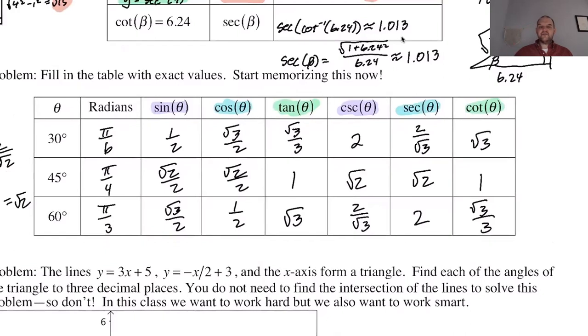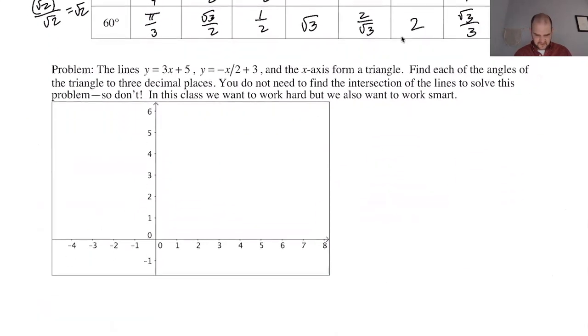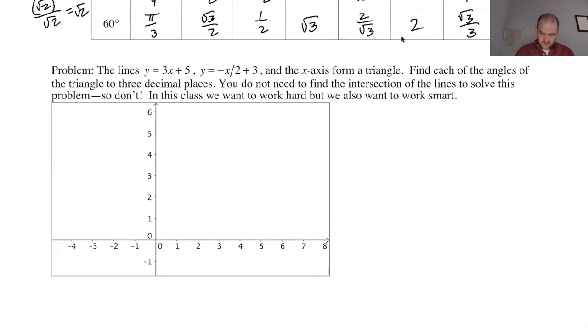So these are the values, really memorize sine, cosine, tangent, and then the relationships, and you get the other ones kind of for free, in my opinion. So let's see if we can answer this. There's a key piece of information here. The lines, y equals 3x plus 5, y equals negative x over 2 plus 3, and the x-axis form a triangle.